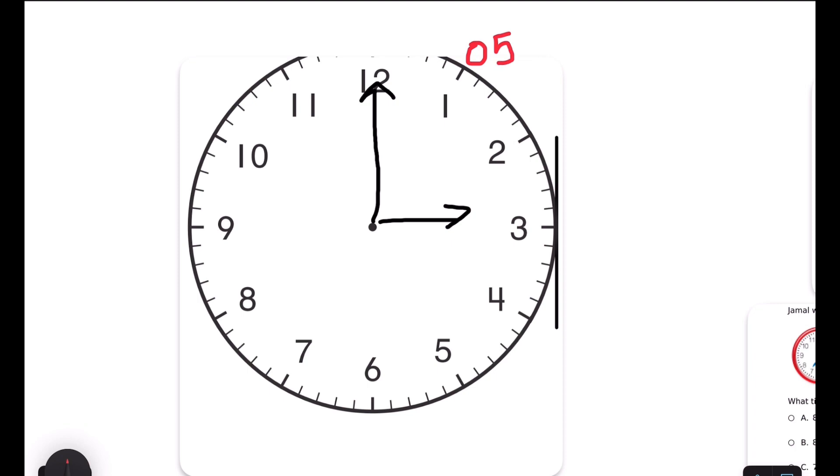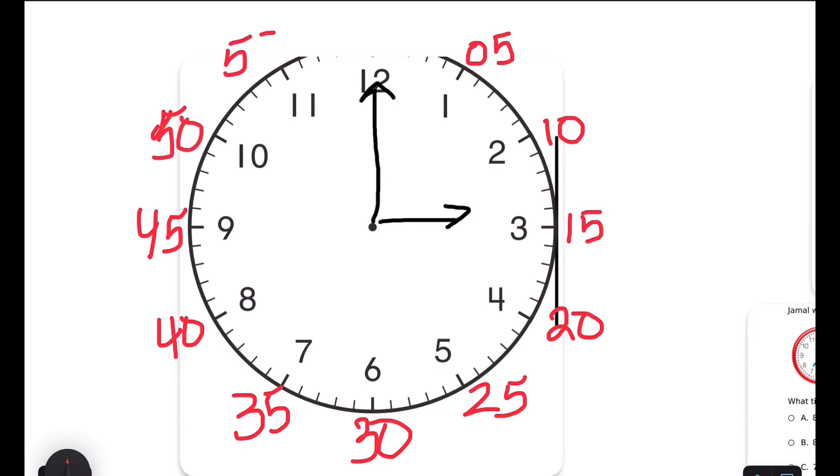The 2 represents 10, the 3 represents 15, 4 is 20, 5 is 25, 6 is 30, 7 is 35, 8 is 40, 9 is 45, 10 is 50, 11 is 55.